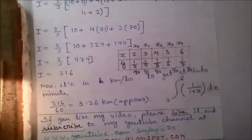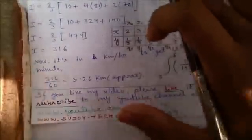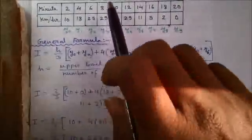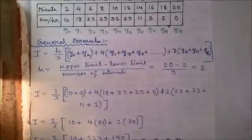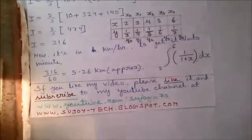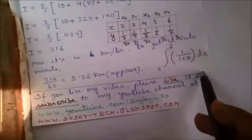There is another type of Simpson's one-third rule question. There you will not be provided with the table; you have to generate the table yourself.